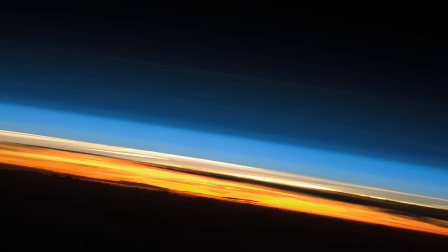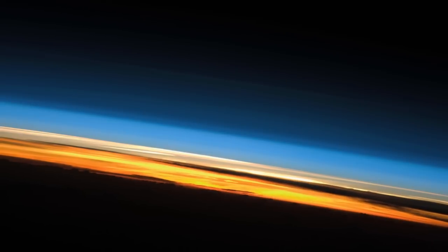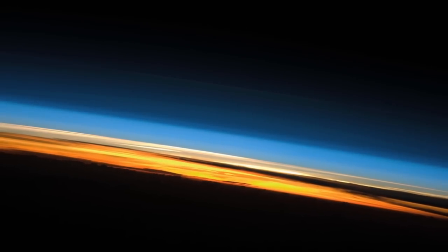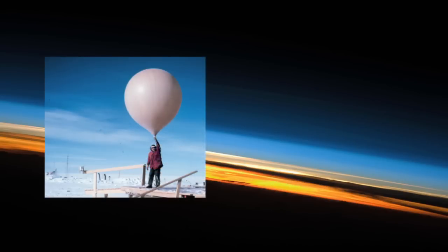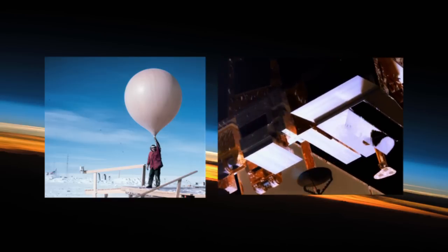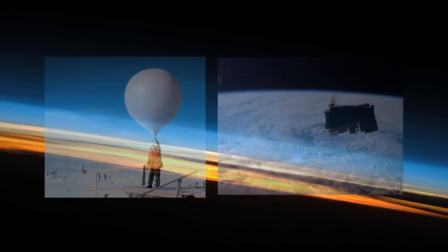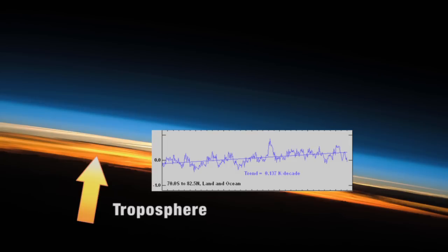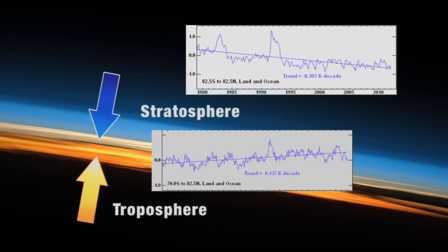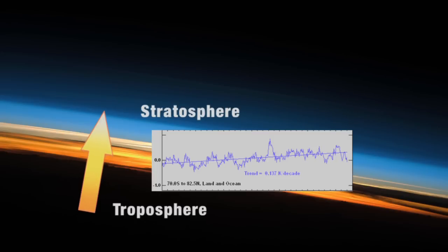Further evidence that current warming is not a result of solar changes can be found in the temperature trends in the different layers of the atmosphere. Data from weather balloons and satellites show a warming trend in the lower layer of the atmosphere, the troposphere, and a cooling trend in the upper layer, the stratosphere. This is exactly the vertical pattern of temperature change expected from increased greenhouse gases, which trap energy closer to Earth's surface. If an increase in solar output were responsible for the recent warming trend, the vertical pattern of warming would be more uniform through the layers of the atmosphere.